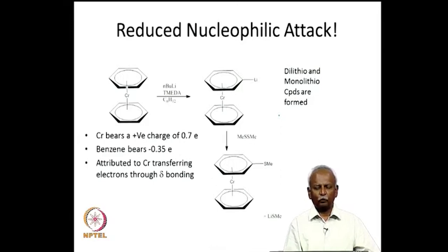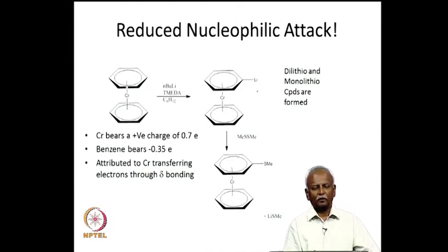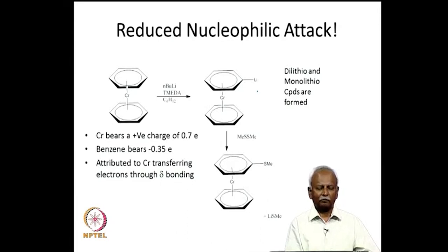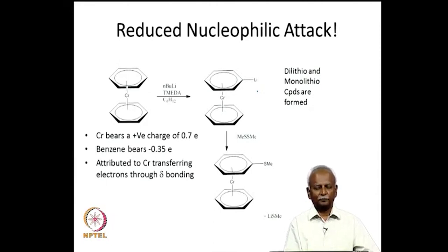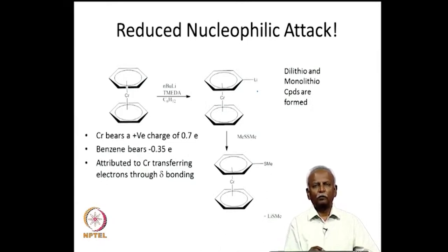Looking at bis-benzene chromium itself, lithiation of the aromatic hydrogen is not a favored reaction — it can be done, but it is not as favorable as with pure benzene. This is consistent with the electronic structure: the chromium bears a positive charge and a slight negative charge results on the benzene ring, indicating increased electron density on the ring. Consequently, it is not likely to undergo nucleophilic attack, which is true for reaction with n-butyllithium.